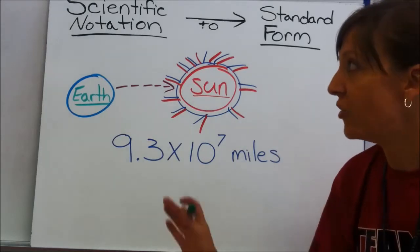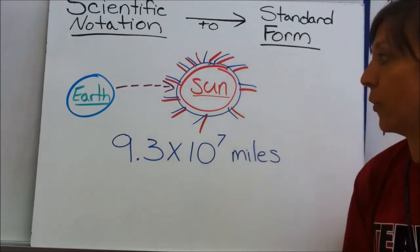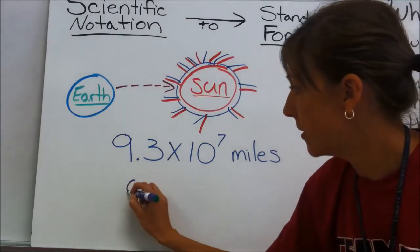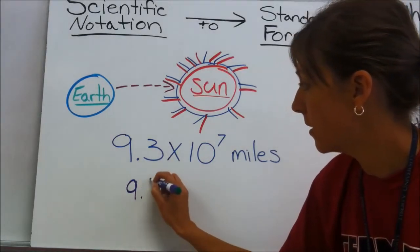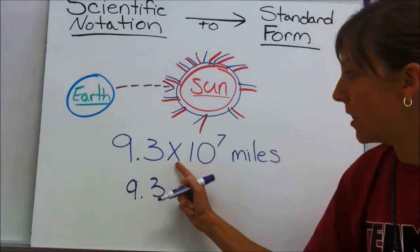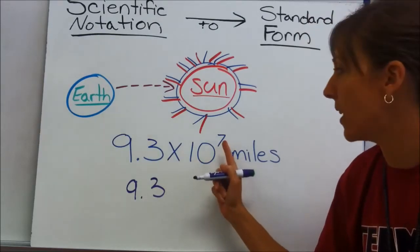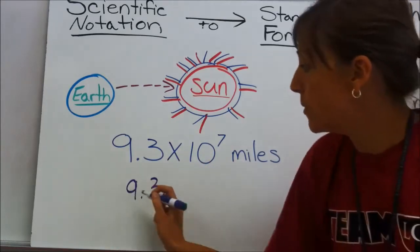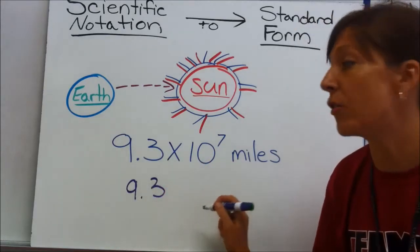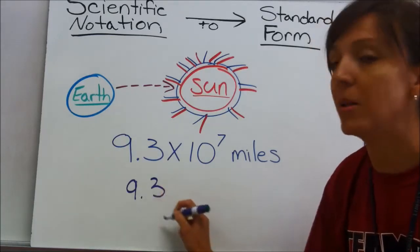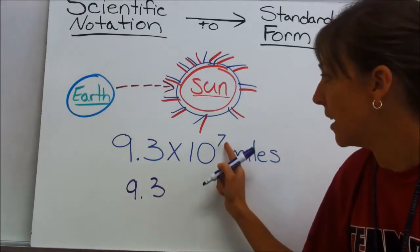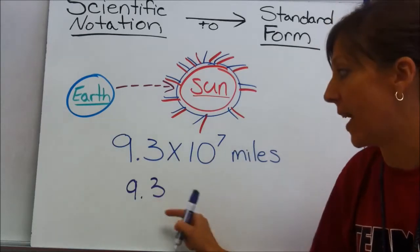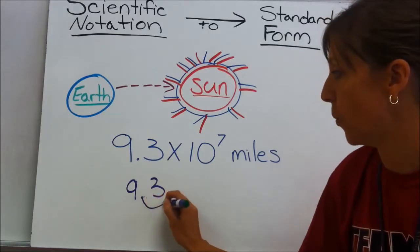Now let's change that back into Standard Form. First, I'm going to write my number. Then I'm going to look at times 10 to the 7th power. That's a positive 7, and positive numbers are on the right side of my number line. So I'm going to move this decimal towards the right, 7 places, because times 10 to the 7th would be 7 place value spots.